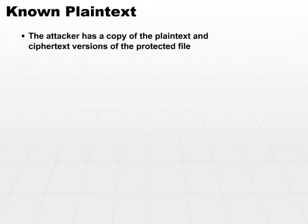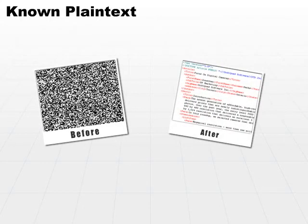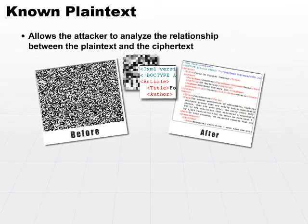In addition to the brute force attack, there's also another common attack called the known plaintext attack. In this attack, the attacker has a copy of the plaintext and the ciphertext version of the protected file — so he has before and after pictures. This allows the attacker to analyze the relationship between the plaintext and ciphertext.